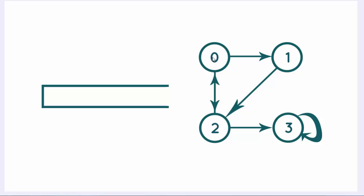The first node we visit is naturally going to be 0, so we push it inside the stack. The logical next step is to pop the stack — take the last element and remove it. So we remove 0, and that is the first element of our result. Once you pop the stack, you take that element and see which elements it is connected to. Node 0 is connected to 2 and to 1, so you put them both in the stack.